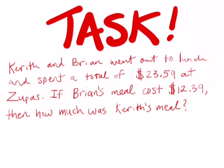Task time. Write this problem down. If Kareth and Brian went out to lunch and spent a total of $23.59 at Zupa's, I love that place, if Brian's meal cost $12.39, then how much was Kareth's meal? So you are going to need to draw a bar model to represent this story problem and then look back in your notes and decide which of the two problems that you did earlier is this most like. So is it going to be an adding problem, a subtracting problem, and how are you going to solve it? You can use number line or you can use the traditional algorithm, but the important thing is that you try, that you draw a bar model of what you think it'll be and you try to solve. And remember we're trying to solve for a part that is unknown. Good luck, share your answers at school.